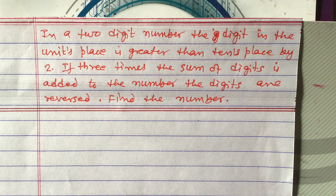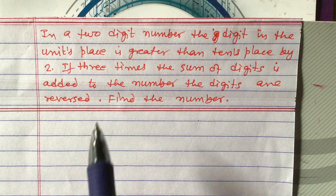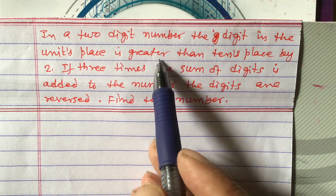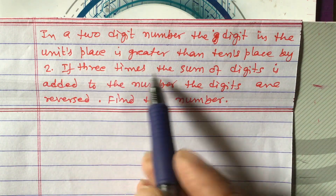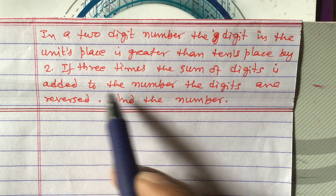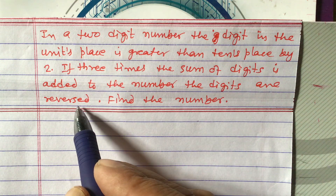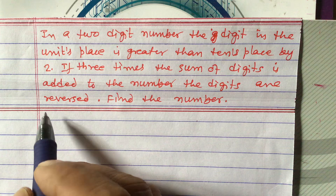Dear students, yesterday Sushasana had asked me one question related to a word problem of simultaneous equation type. The question is: in a two-digit number, the digit in the units place is greater than the tens place by two. If three times the sum of the digits is added to the number, the digits are reversed. Find the number.